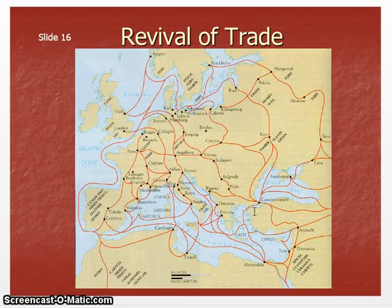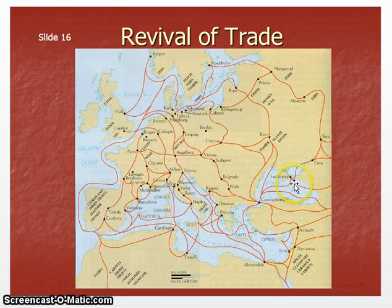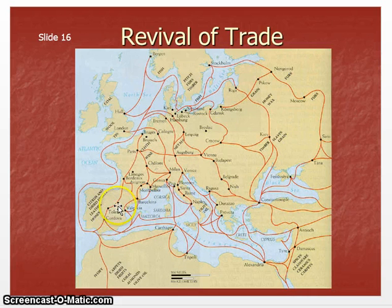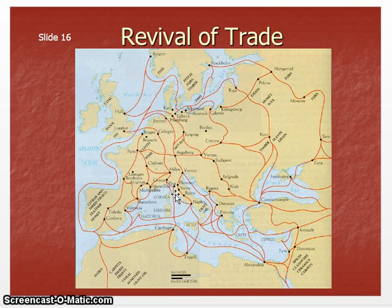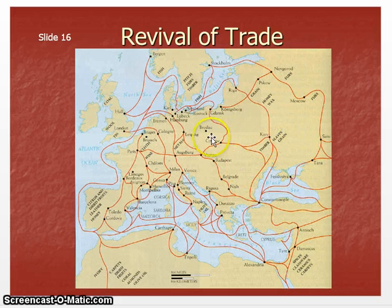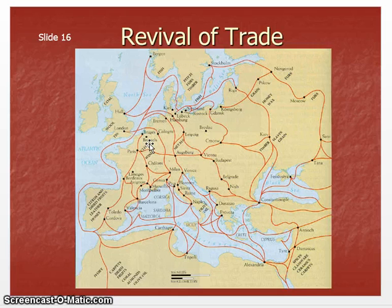Another thing that happened was trade revived. Trade is really important because that's how goods and ideas get around. On this map of Europe — showing Italy, Spain, and England — we can see all the different trade routes that developed, all the small towns and cities, and all the routes traders took to trade their goods. Farmers could trade their food as well. Trade blew up and expanded during this time.